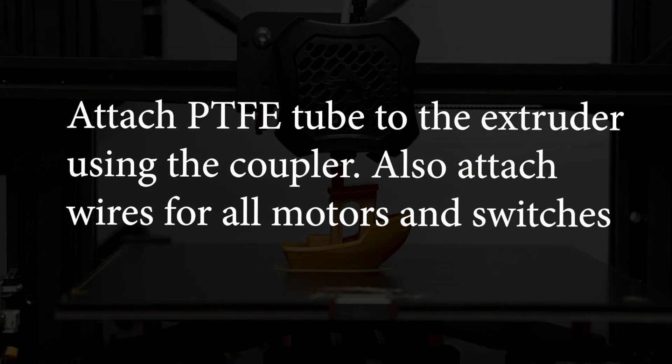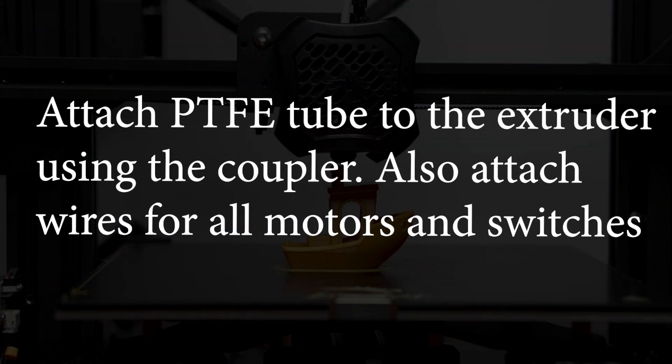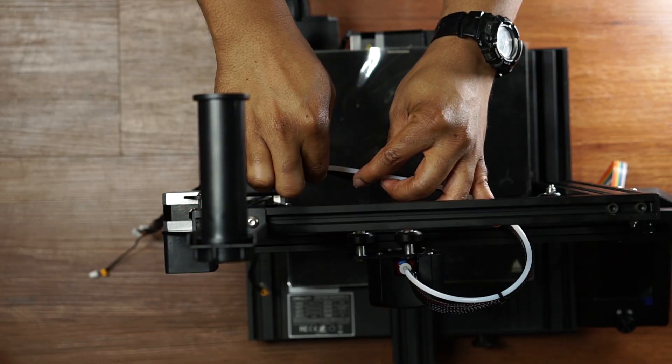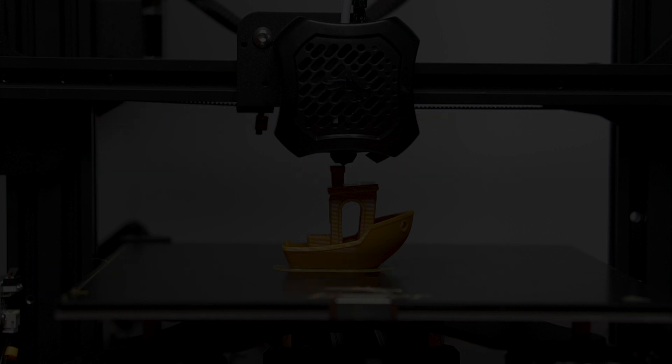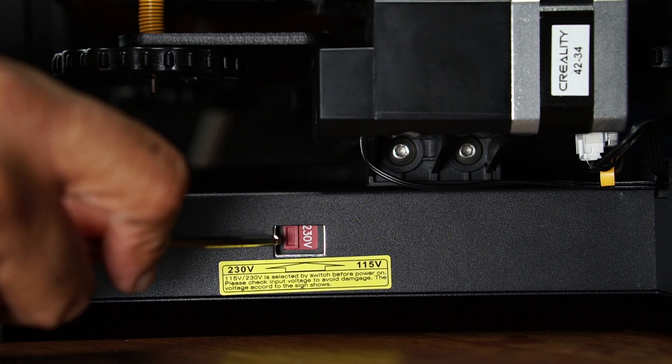Next up attach your PTFE tube to the extruder using the coupler and also attach all your wiring. Flip the voltage switch on the back to the correct voltage, that's going to be 115 for the U.S. and 230 for Europe.